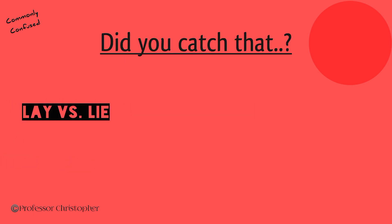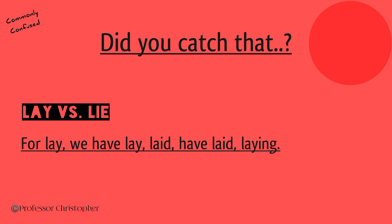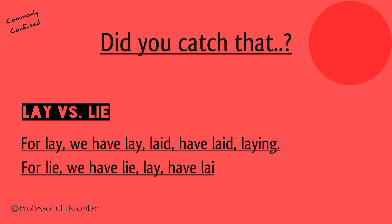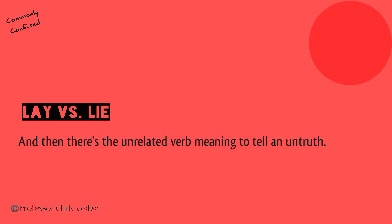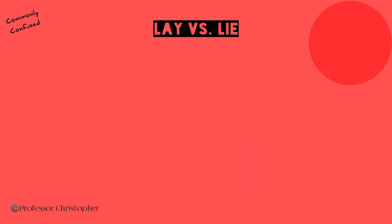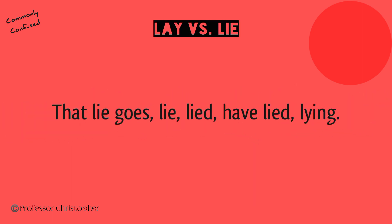Did you catch that? For lay, we have: lay, laid, have laid, laying. For lie, we have: lie, lay, have lain, lying. And then there's the unrelated verb meaning to tell an untruth. That lie goes: lie, lied, have lied, lying.